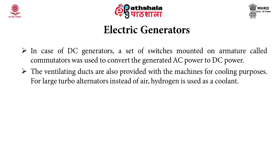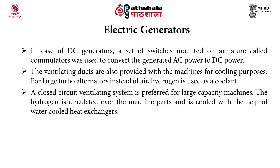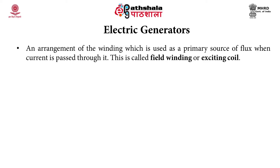Ventilating ducts are provided with the machines for cooling purposes. For large turbo alternators, hydrogen is used as a coolant instead of air. A closed circuit ventilating system is preferred for large capacity machines, where hydrogen is circulated over the machine parts and cooled with the help of water-cooled heat exchangers. An arrangement of winding used as the primary source of flux when current is passed through it is known as field winding or exciting coil.